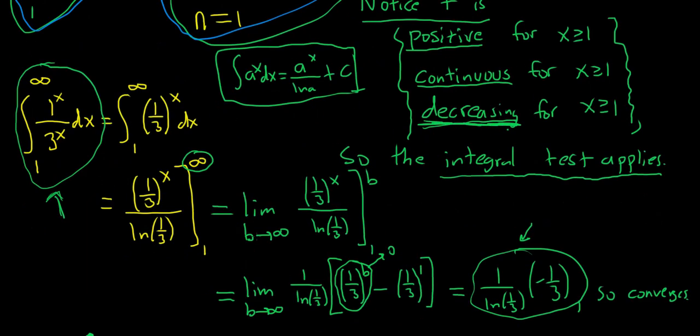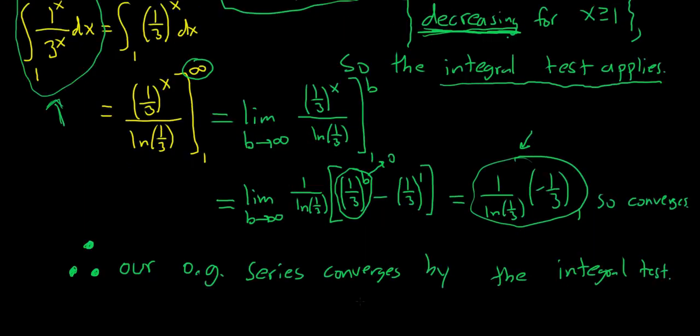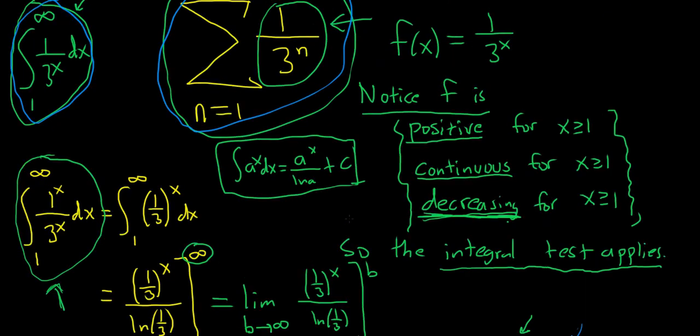You work out your integral. Usually it's pretty easy, the integral. Usually it's not too difficult. If you get a number, then it converges. And then that means that your original series converges by the integral test. If you don't get a number, so if you get infinity, negative infinity, or DNE, that means that your original series diverges by the integral test.